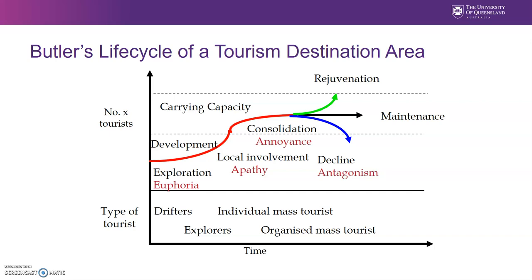So what happens is a destination begins to form, and when it first starts to form you don't have a lot of people coming. That's why we say the drifters are coming during this exploration phase. The destination is not really well developed at that point — there may be very few attractions or events, and rather limited facilities and infrastructure in place.